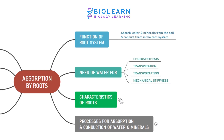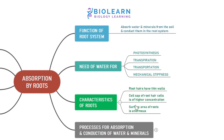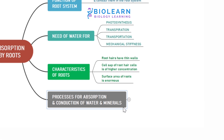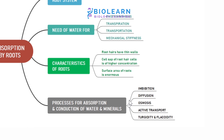Roots possess various characteristics for absorbing water. The root hair cells have thin cell walls. The cell sap of root hairs is of higher concentration compared to the surrounding water in the soil, and the surface area of roots is very large for absorption as required.